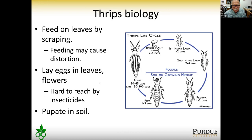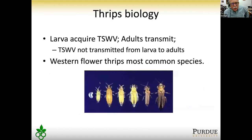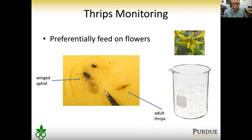The larvae acquire the virus from the plant, and the adults transmit it. The virus is not transmitted directly from larva to adult — so the larvae do the acquiring, and then adults also need to re-acquire it from the plant. There are many different thrips species, but the Western Flower Thrips is the most common species involved with tomato spotted wilt virus.